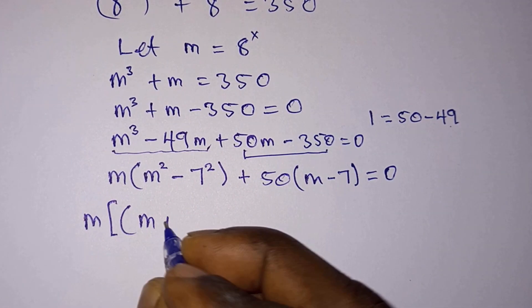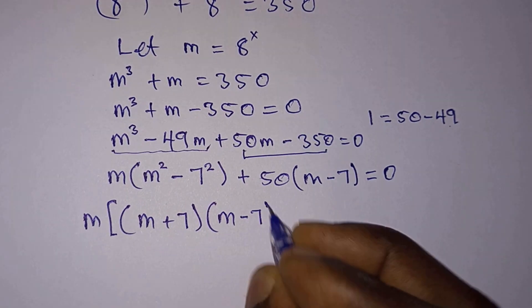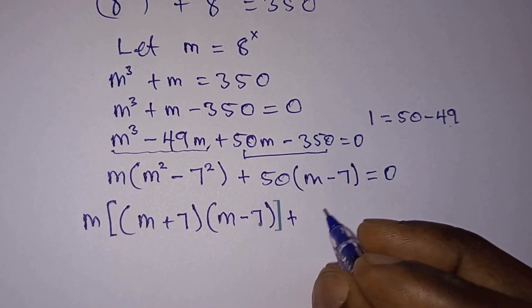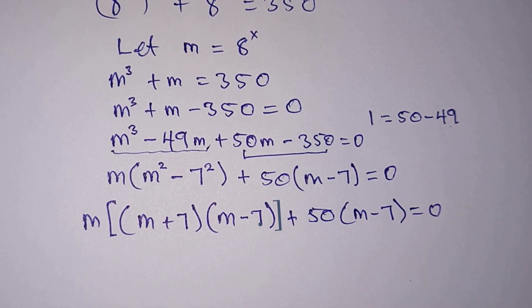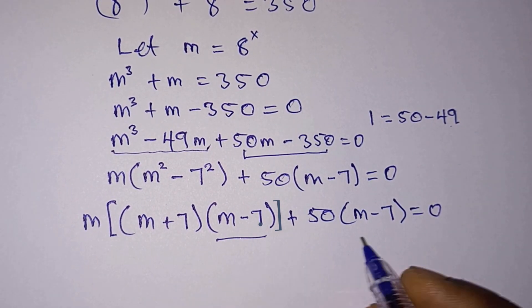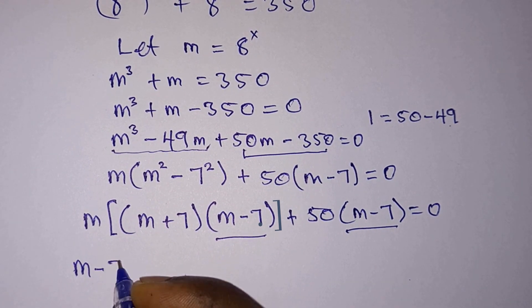Then plus here we have 50 times m minus 7, and this is 0. Now we have m minus 7, m minus 7, so let's factor it. We have m minus 7.